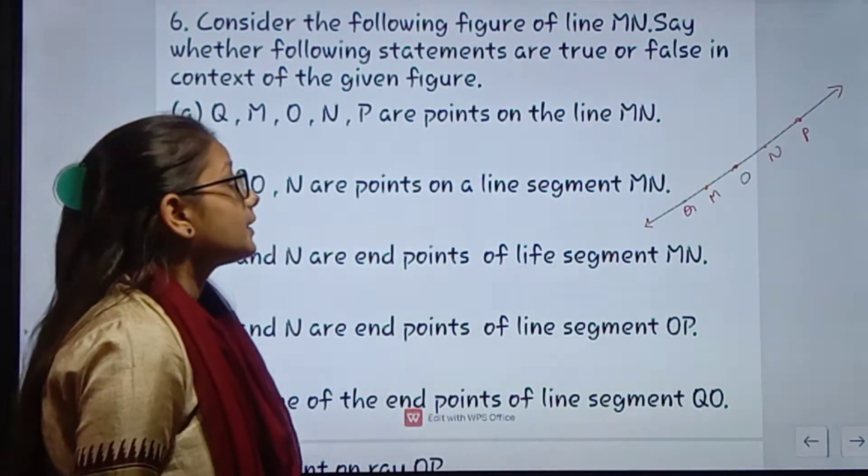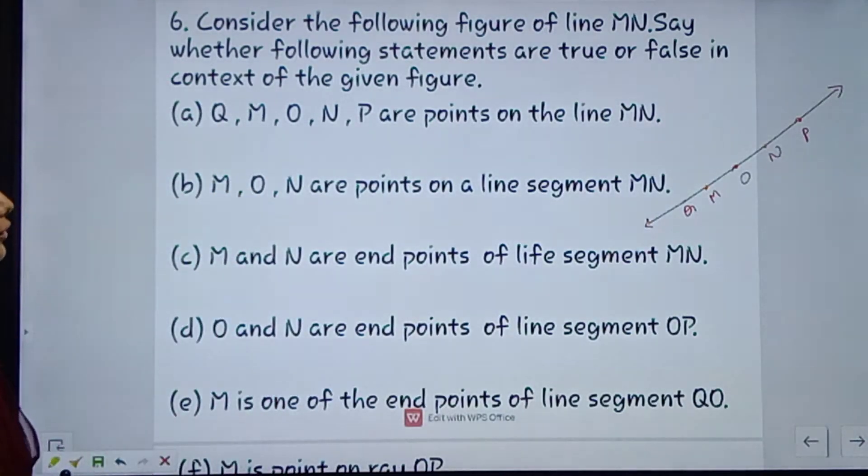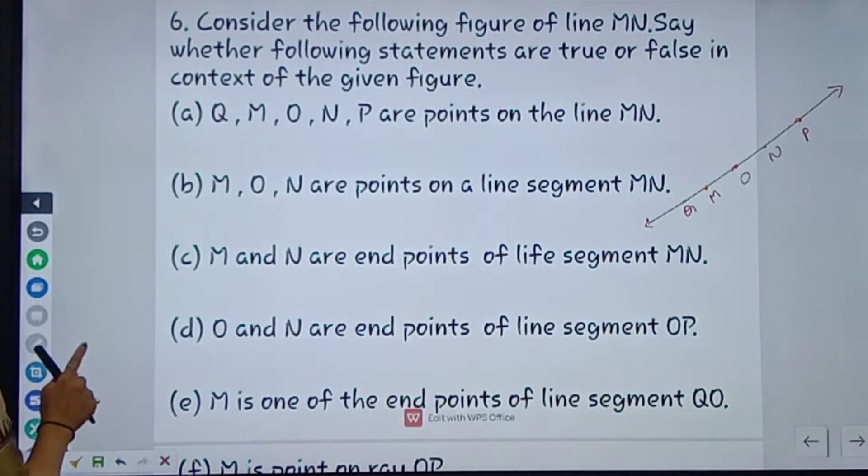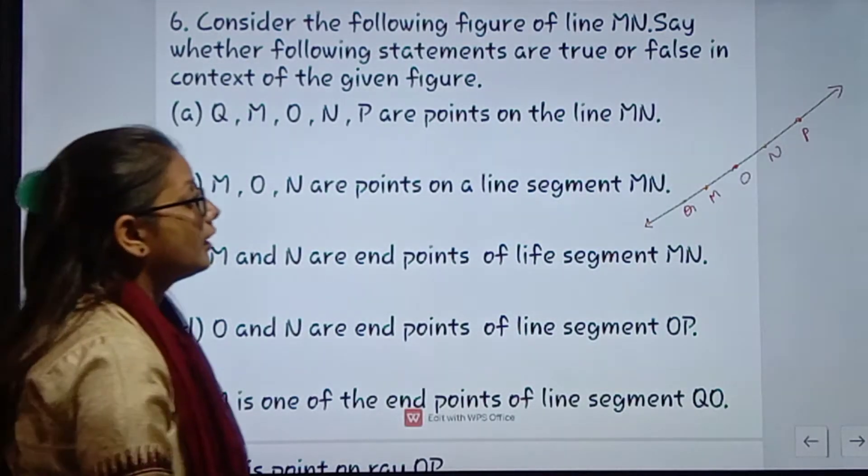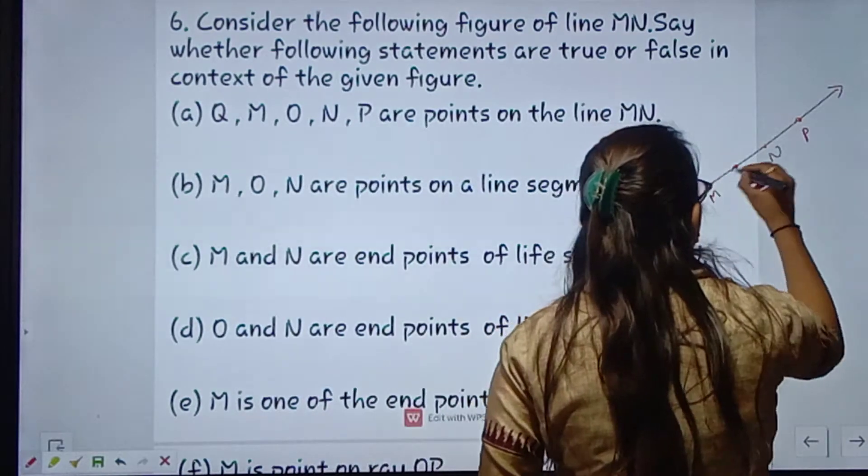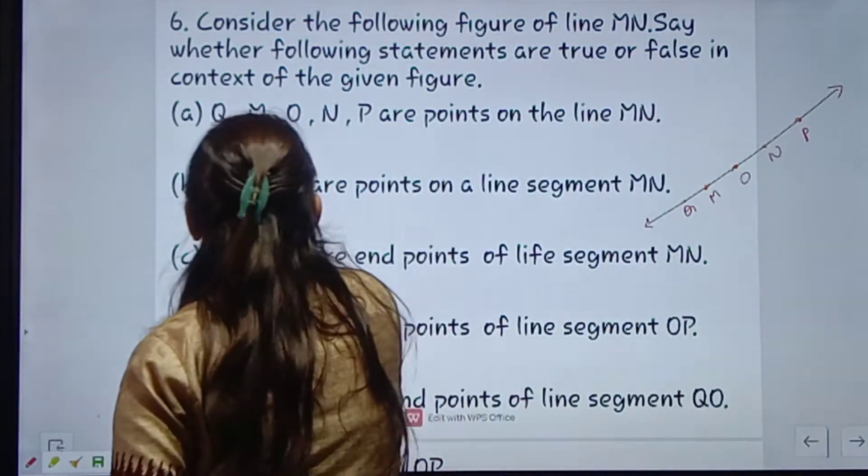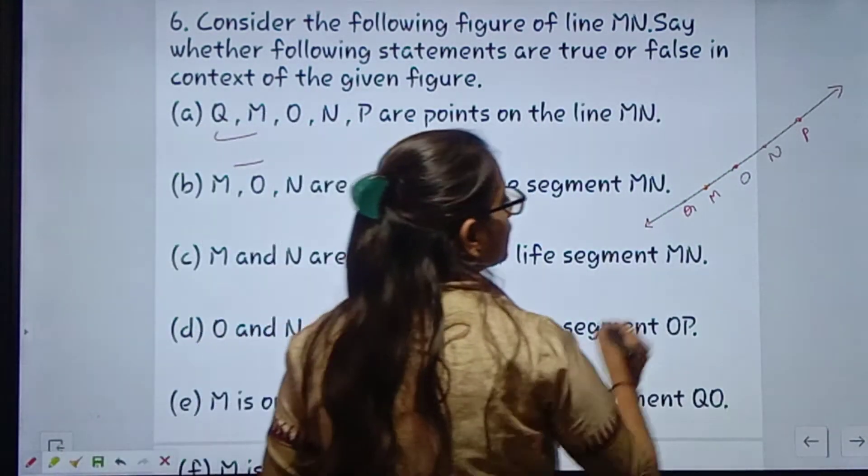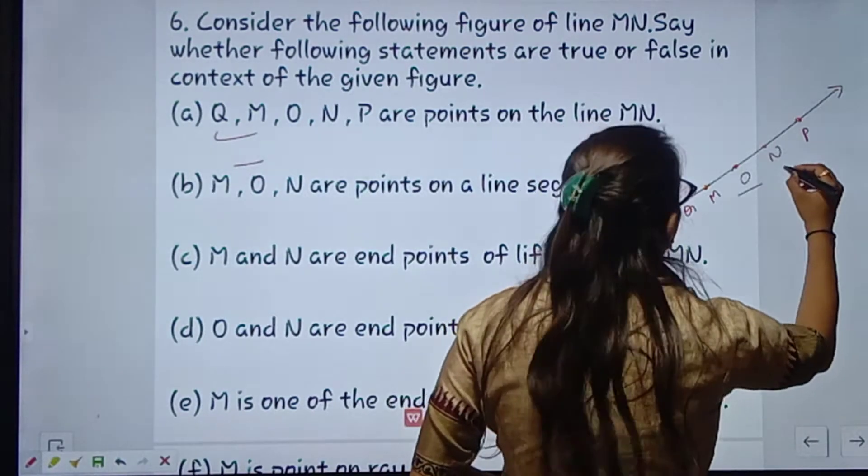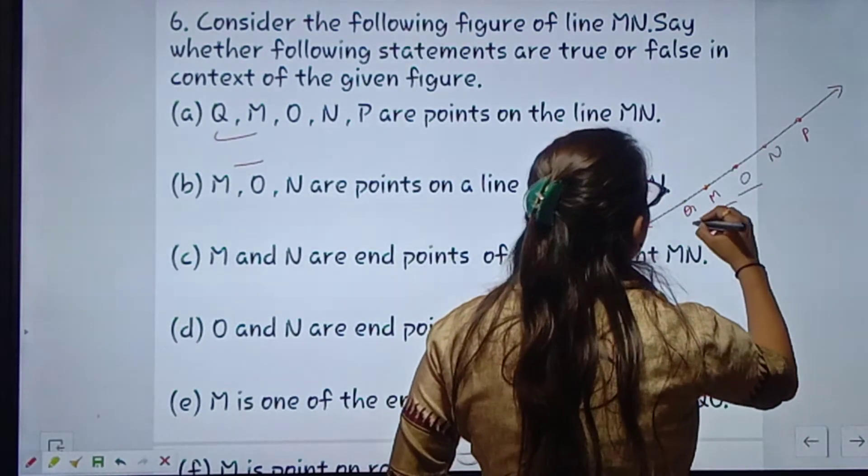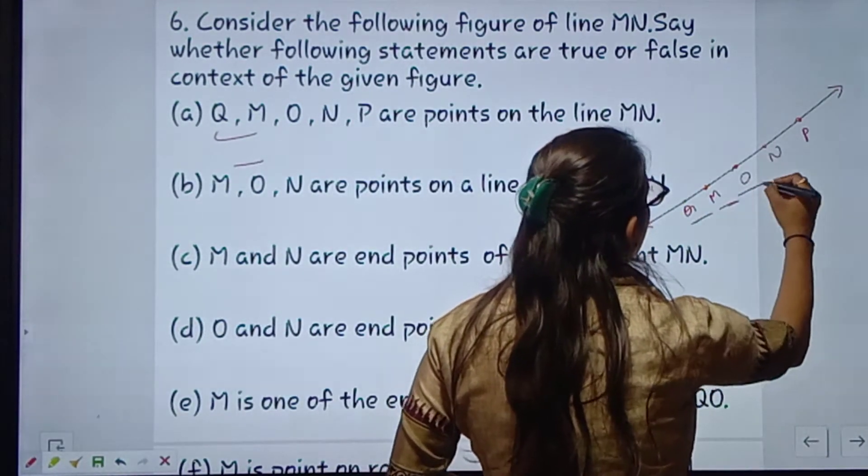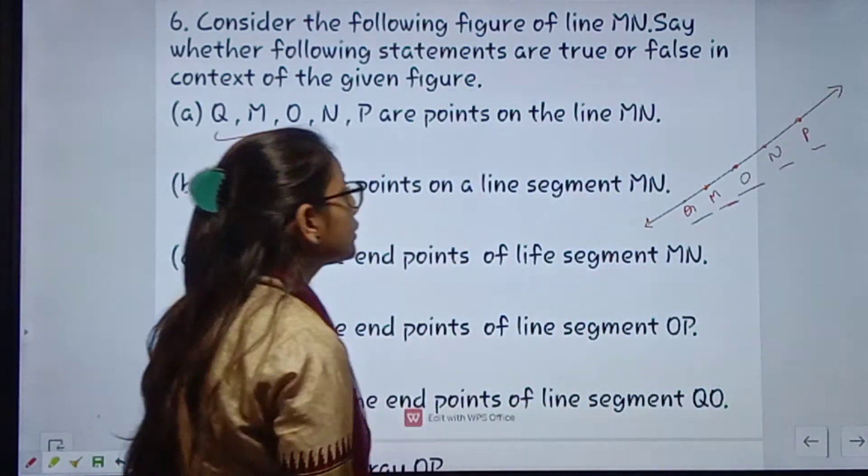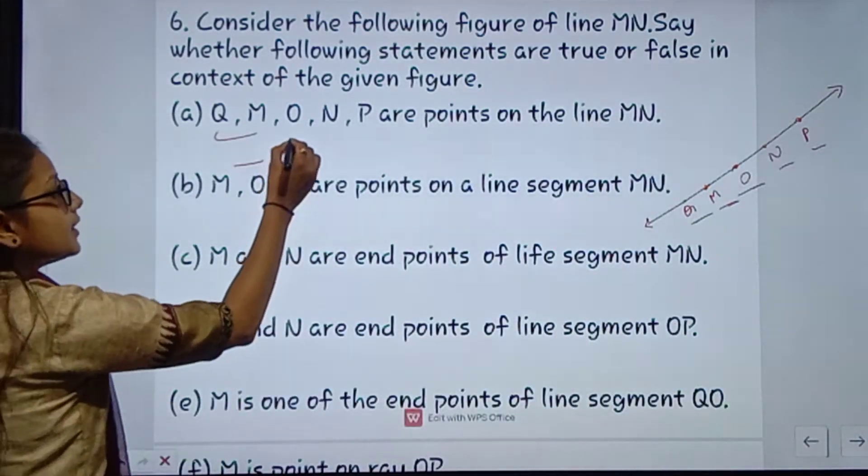Following statements are true or false - bata na hai bita. First is Q, M, O and P are points on the line MN. MN ye line hai, iske oopar Q, M, O, N, P points hai, to this statement is true.